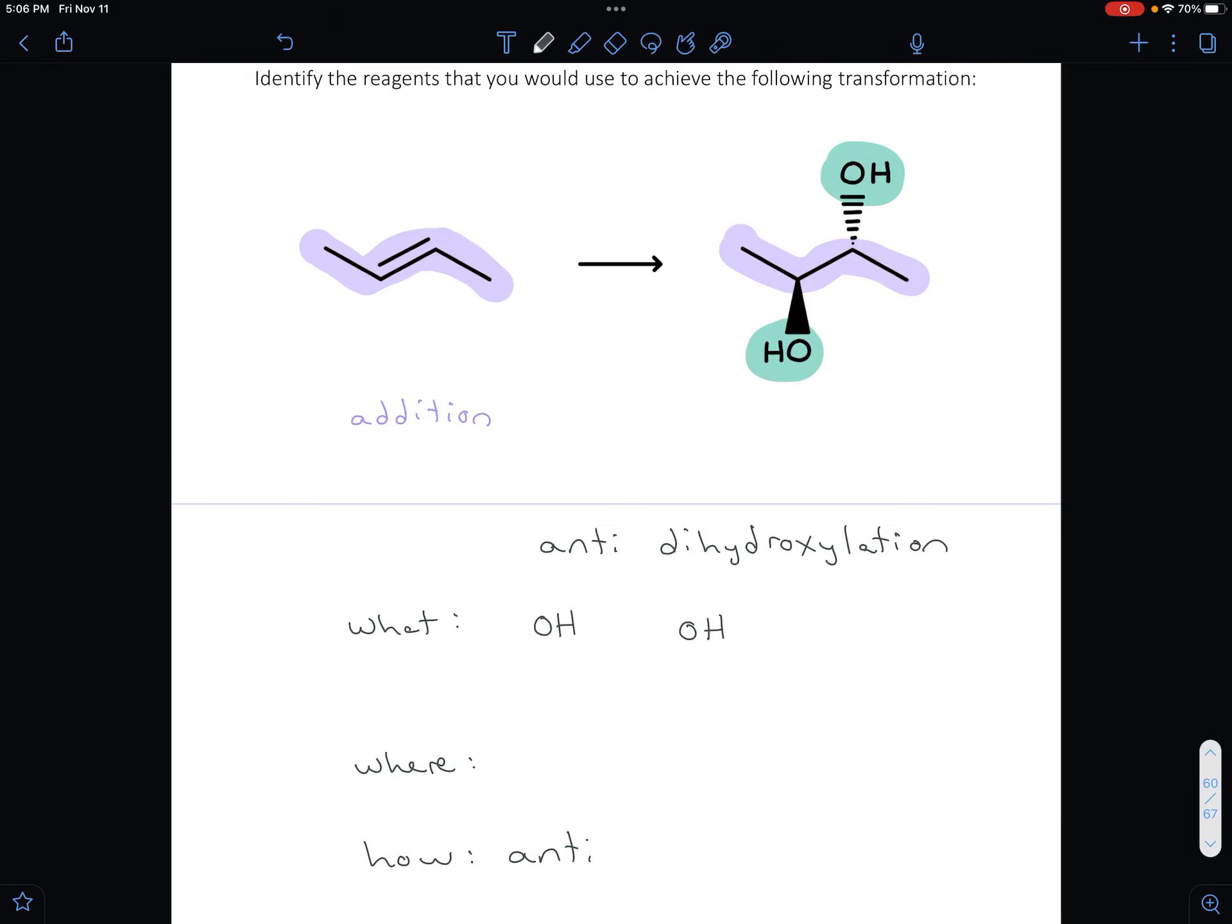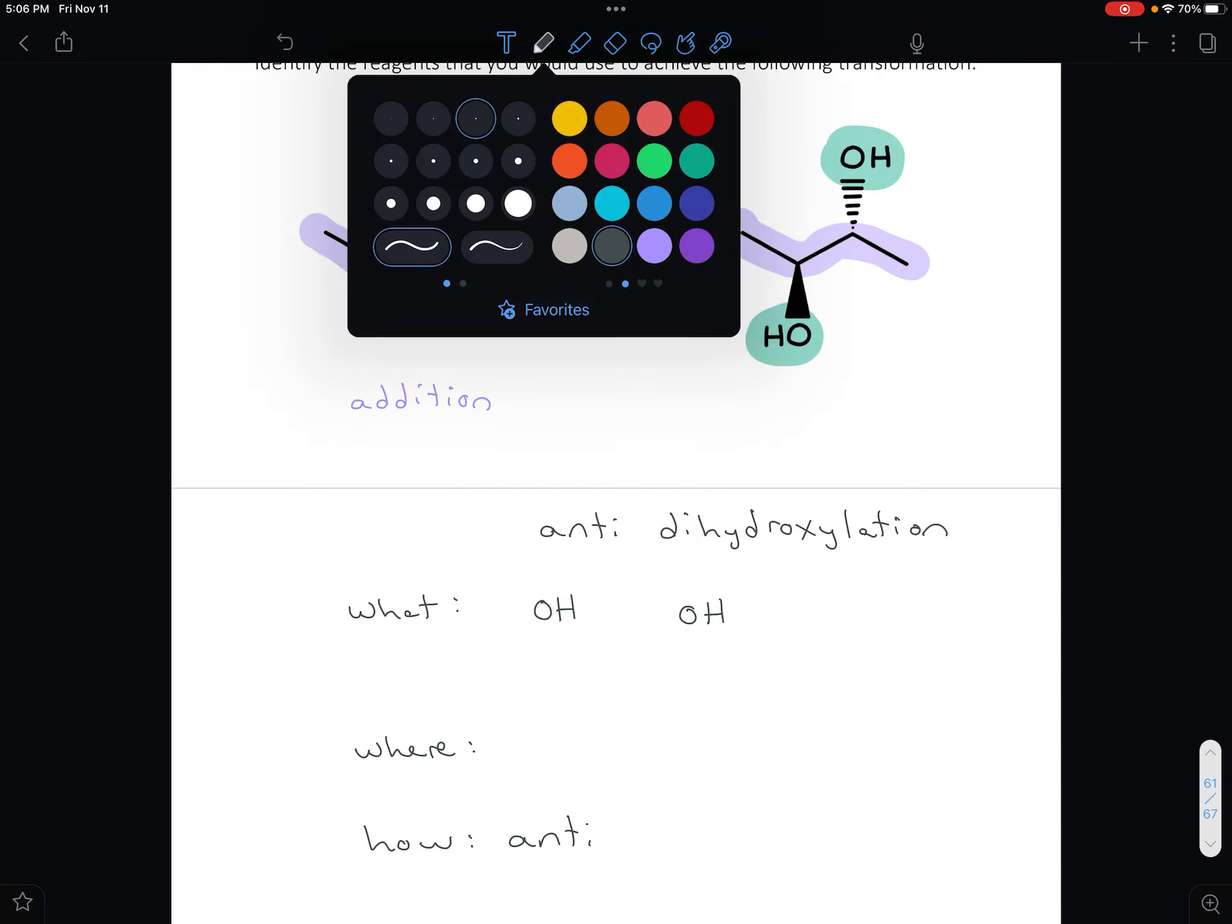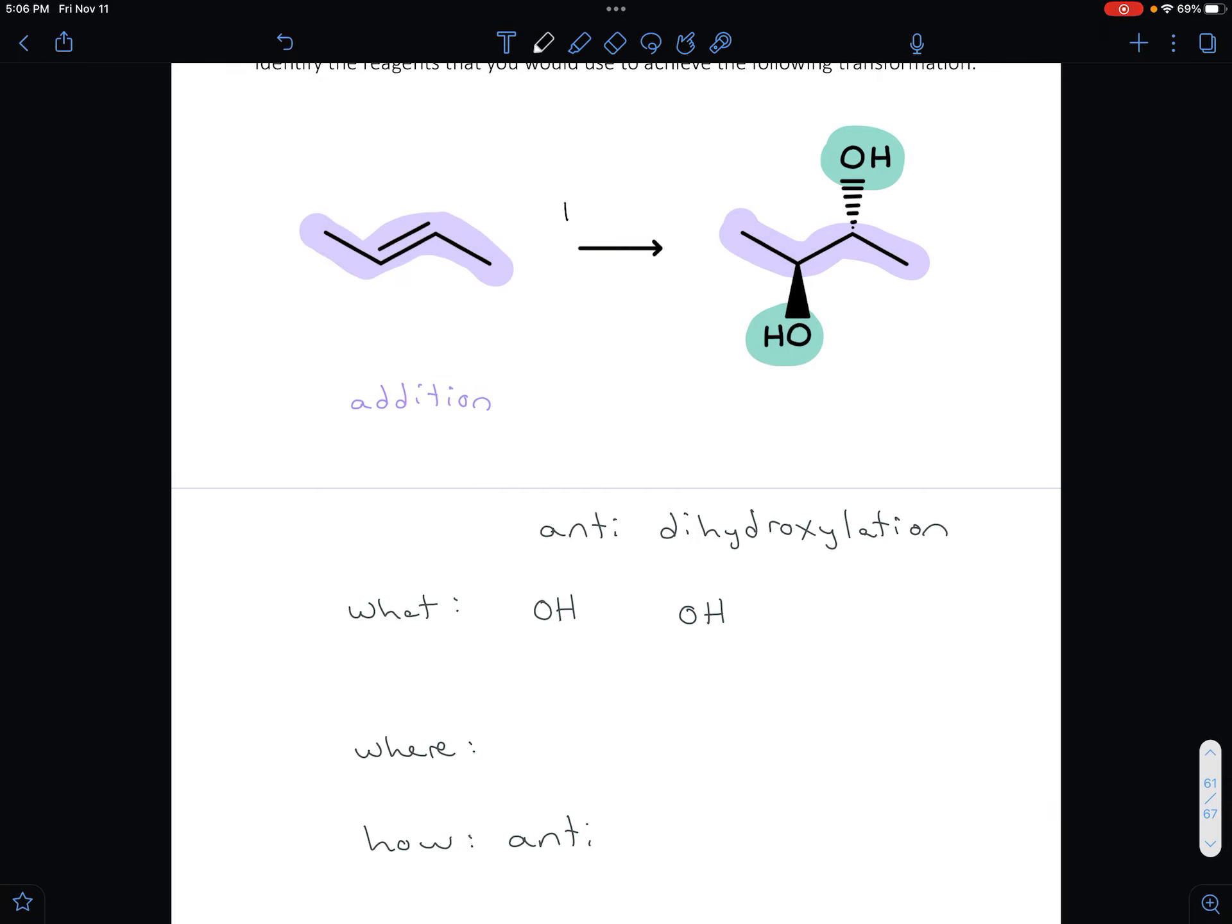When you do anti-dihydroxylation, the first thing you want to do is get a peroxy acid in your first step. So the first thing you need is a peroxy acid.